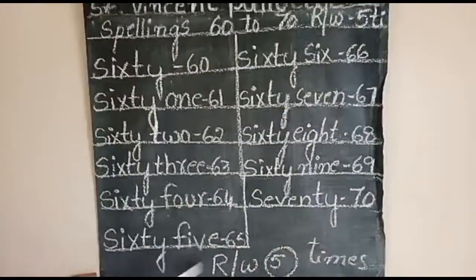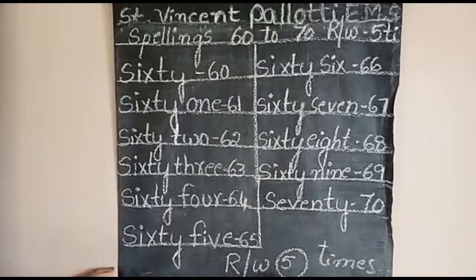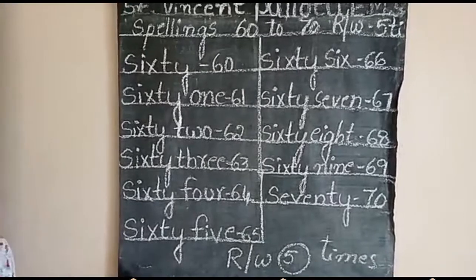Okay, children. These spellings read and write five times. Write in your CW also five times. Okay, children. Thank you. Bye.